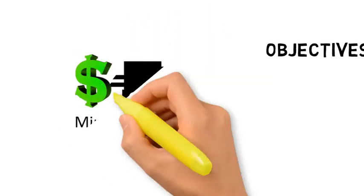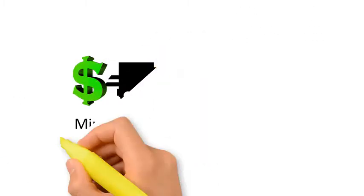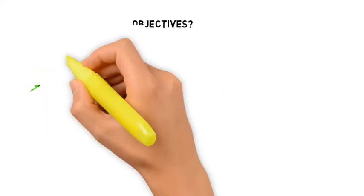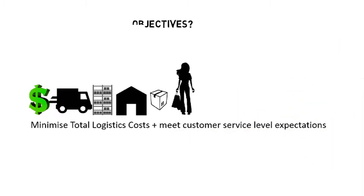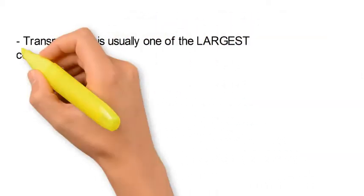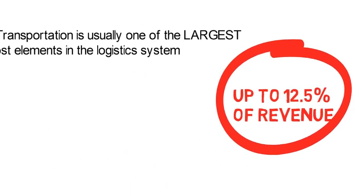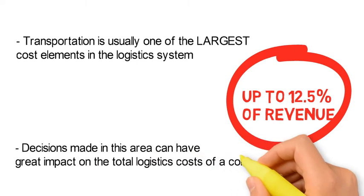Is the objective just to minimise transportation costs? No. It is the objective to minimise total logistics costs — and even that is not enough. The objective is really to minimise total logistics costs while meeting customer service level expectations. Transportation is usually one of the largest cost elements in the logistics system; in fact, it can form up to 12.5% of revenue, so decisions in this area can have a very significant impact on total logistics costs.